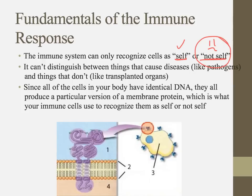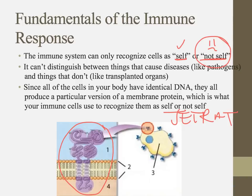Since all of your cells contain identical DNA, they all produce a particular version of a membrane protein. All the cells in your body have some version of a membrane protein that your immune system can use to recognize whether they belong in your body or not.